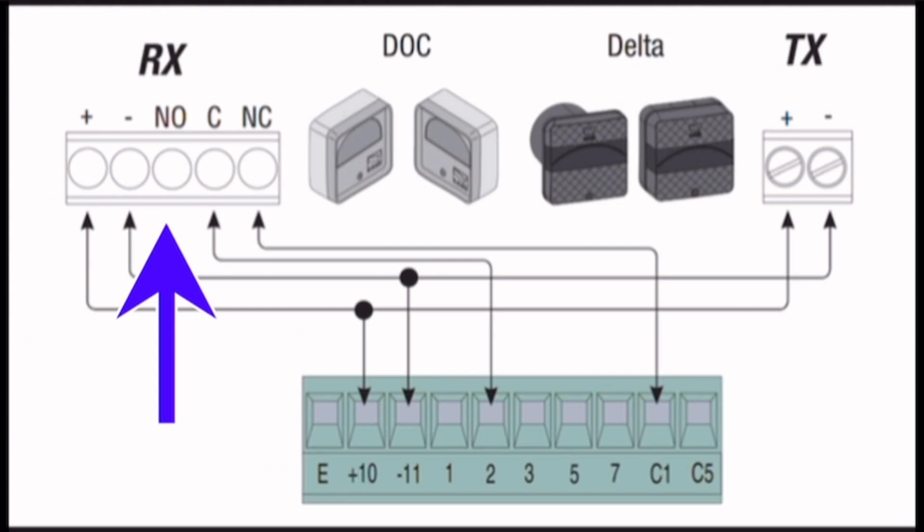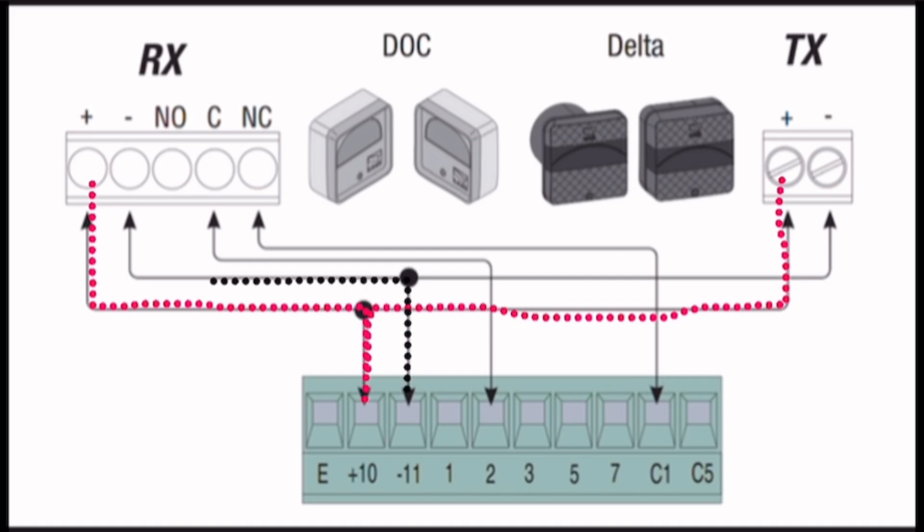Block diagram explanation: Rx is receiver sensor which receives signal rays from Tx sensors. Both sensors need 24 volt power supply to work. The control board terminal +10 directly connects Rx and Tx blocks and provides negative common power to Rx and Tx sensors.